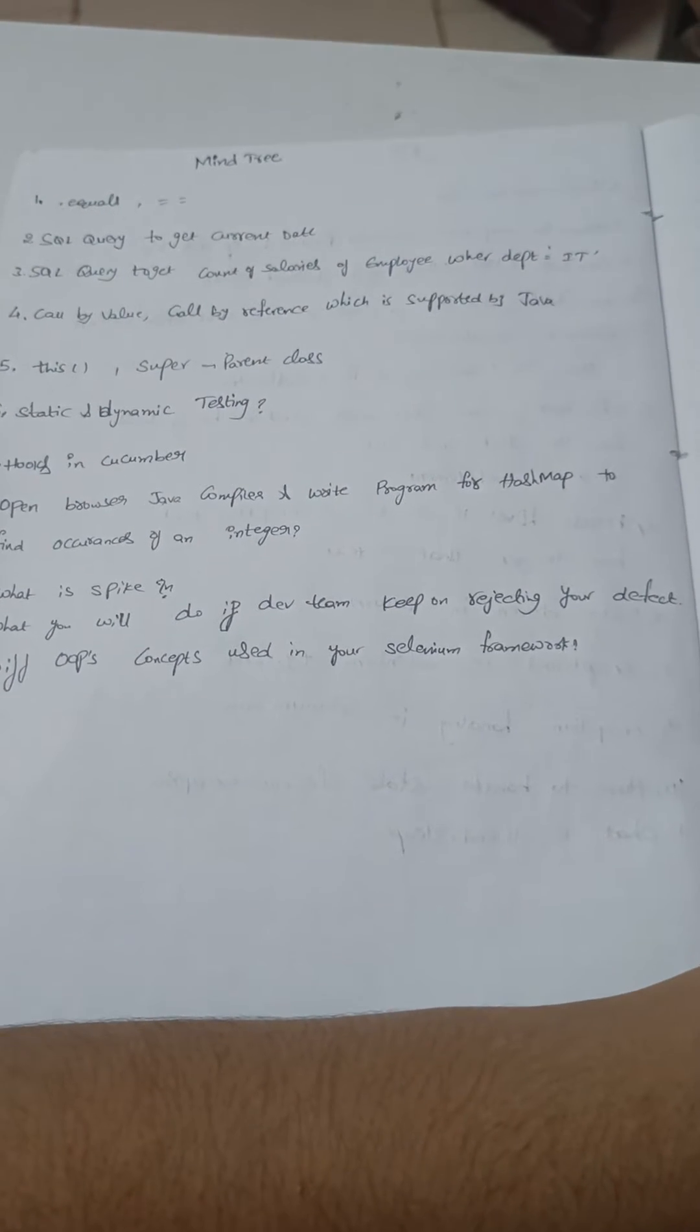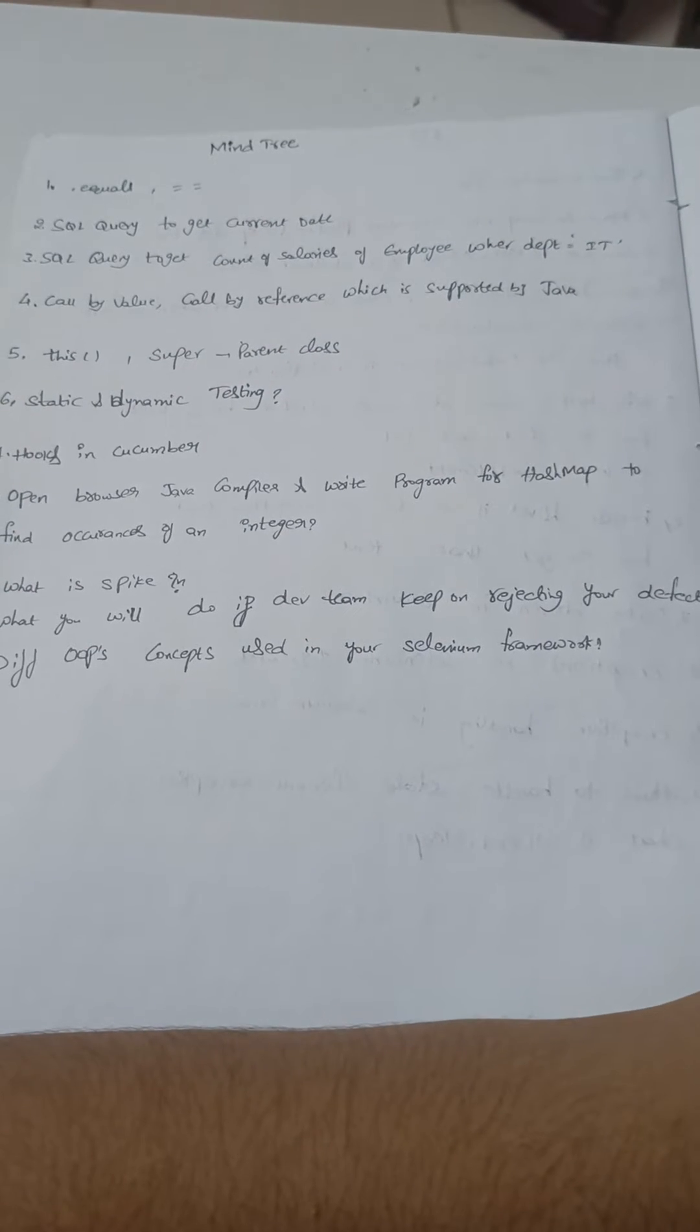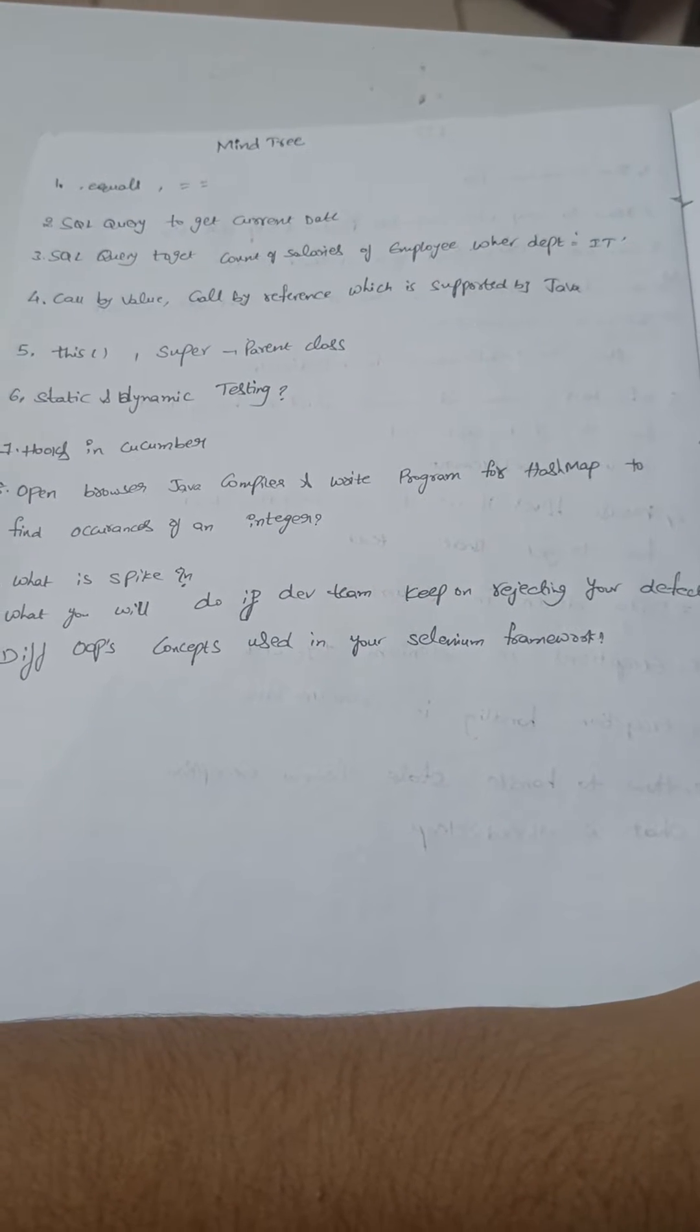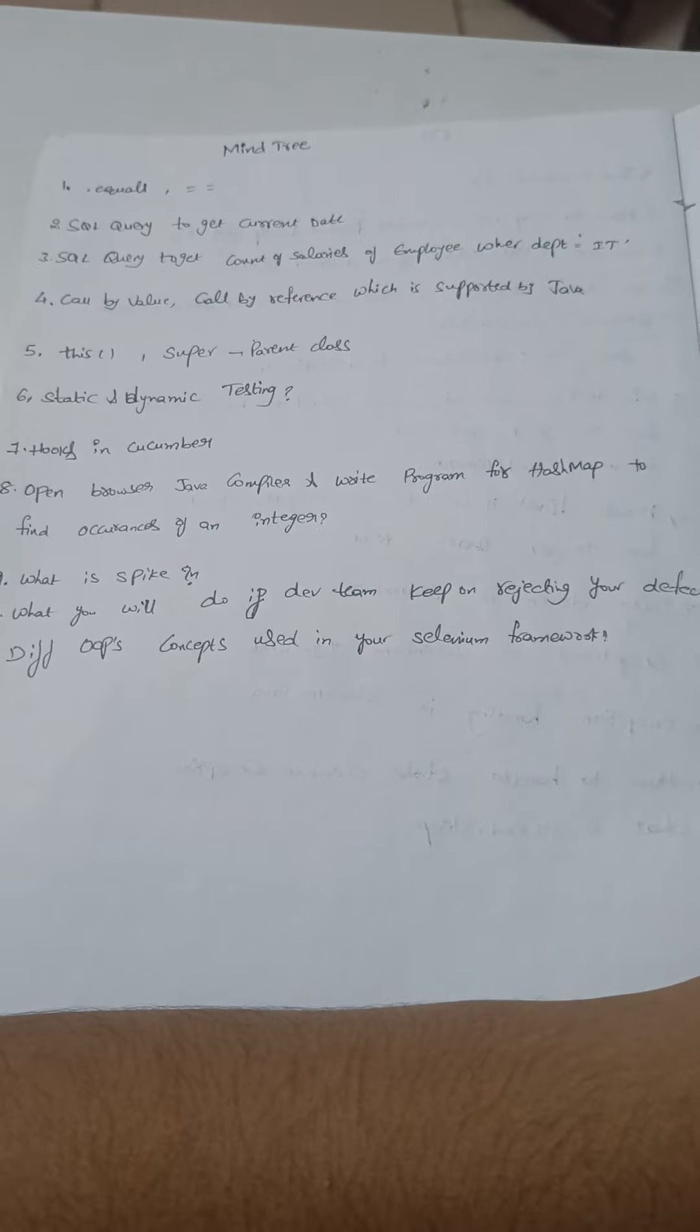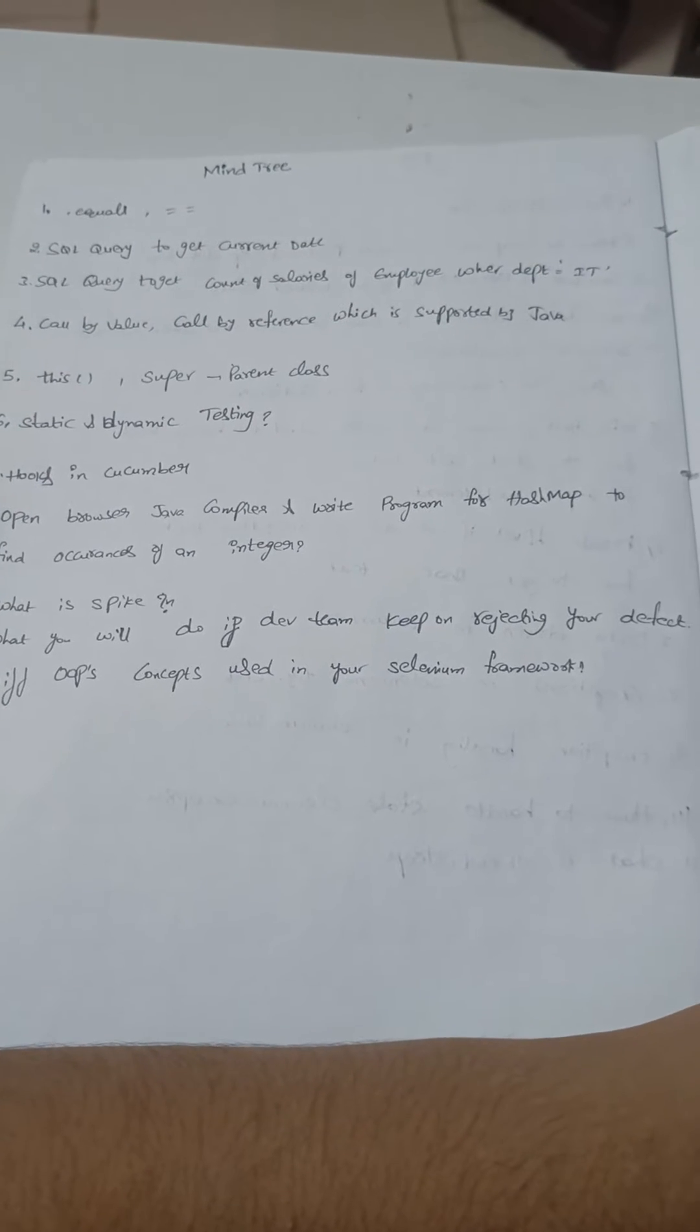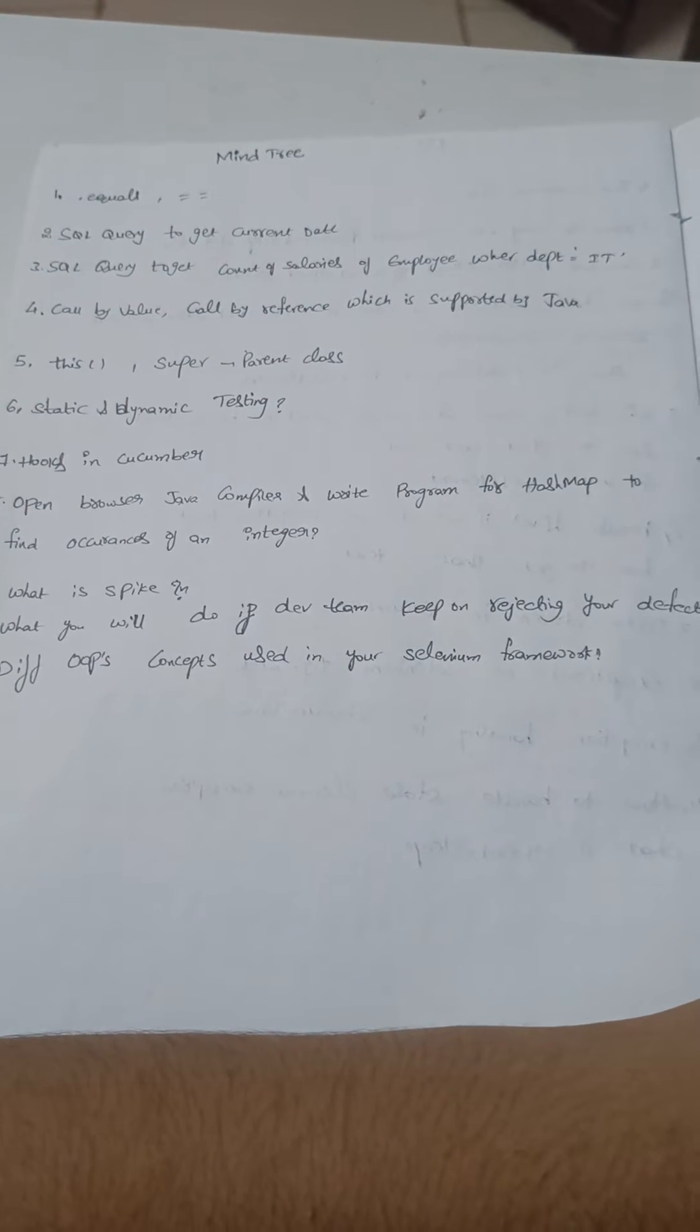Second one is SQL - we have to write an SQL query to get the current date. Third one is again an SQL query to get the count of salaries of an employee for which department is it.